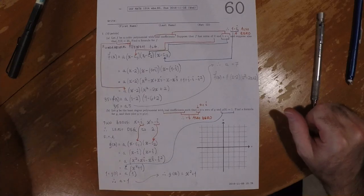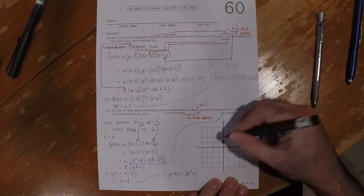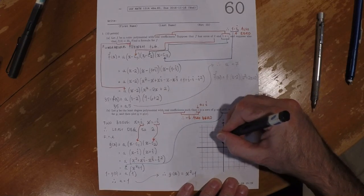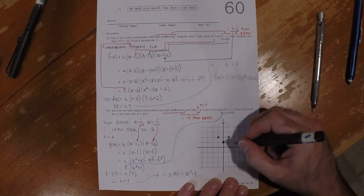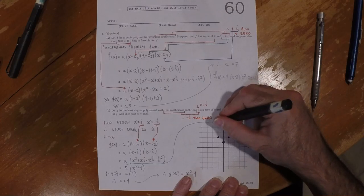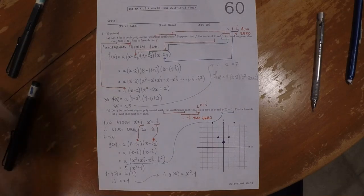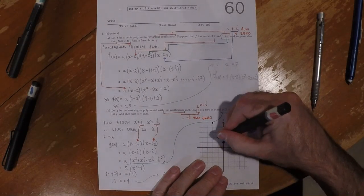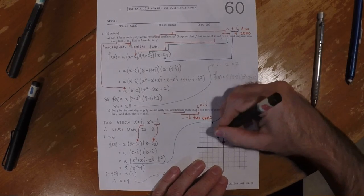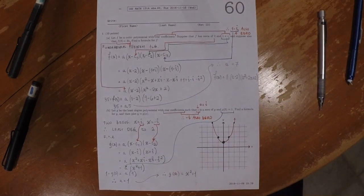Now to plot it. If you plug in 0, you get 1. If you plug in 1, you get 2. If you plug in negative 1, you get 2. If you plug in 2, you get 5. If you plug in negative 2, you get 5. So the function looks like this — and that's the answer.